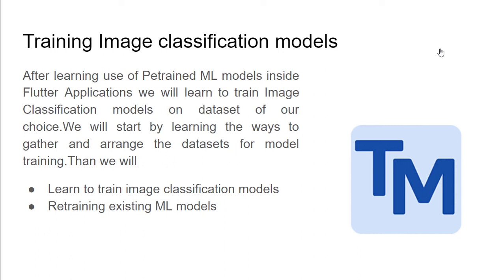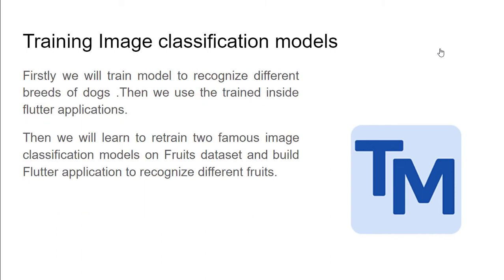After learning to use pre-trained ML models inside Flutter applications, we will learn to train an image classification model on a dataset of our choice. We will cover ways to gather and arrange datasets, then train using two approaches: training a model from scratch, and retraining two famous image classification models.